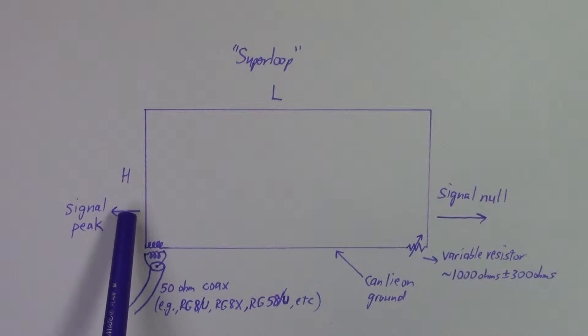So this loop can take on various dimensions. Here we have H for the height, L for the length. The antenna is rectangular, and at one bottom corner we have a transformer to match the high impedance of the loop antenna to the 50 ohm impedance that you're most likely going to need to come into your receiver, whether that's a physical receiver or a software-based receiver such as an SDR. This can be types like RG8U, RG8X, RG58, and other possibilities.